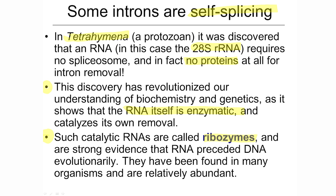This is strong evidence that RNA preceded DNA in an evolutionary fashion. There's a whole idea that there was an RNA world, and RNA metabolism existed before there was probably even cellular life. Catalytic RNAs have been found in all sorts of organisms — they're relatively abundant. Certainly most enzymes are proteins, but the fact that this was not just an isolated incident shows that RNAs can be enzymes too.